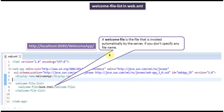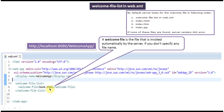Now a quick overview of welcome-file-list in web.xml. In web.xml you can specify a welcome-file-list, and inside it you can specify the welcome-file. The welcome file is the file that will be invoked automatically by the server if we do not specify any file name after the context path. The server checks whether a welcome file is specified in web.xml, and if so it will display that file as the welcome page.